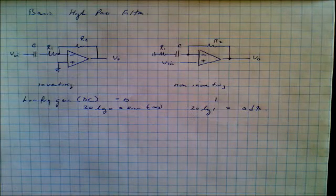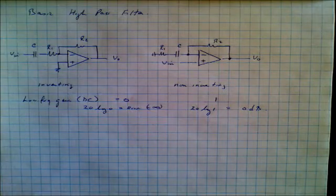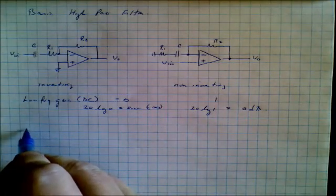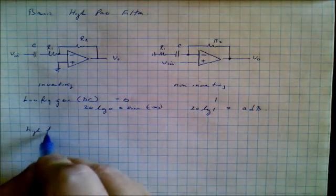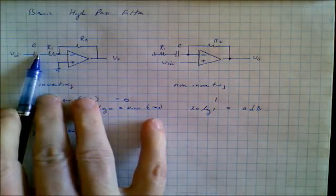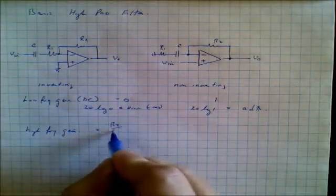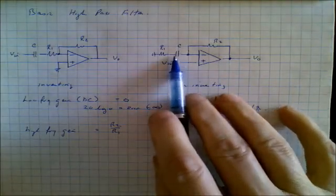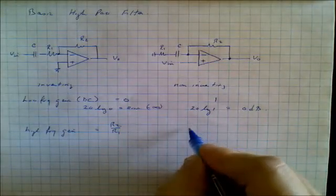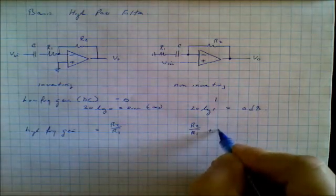So now the question is what is the high frequency gain? Well the high frequency gain is calculated by presuming that the capacitors are short. So let's take a look at that. The high frequency gain of this circuit, the capacitor would be short, and it would simply be R2 over R1. And over here it would be, the capacitor also be short. But because this is a non-inverting amplifier the gain would be R2 over R1 plus 1.